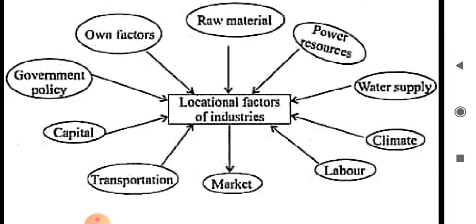Abundant supply of water is available from the rivers Subarnarekha and Kharkai. Next factor: labor. Skilled and unskilled labor is available in the densely populated states of Jharkhand,